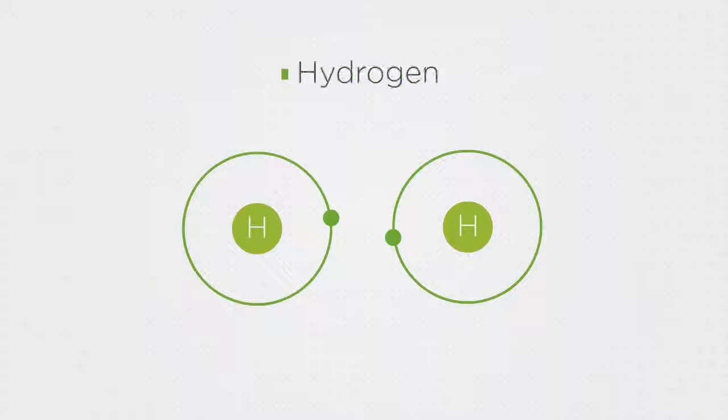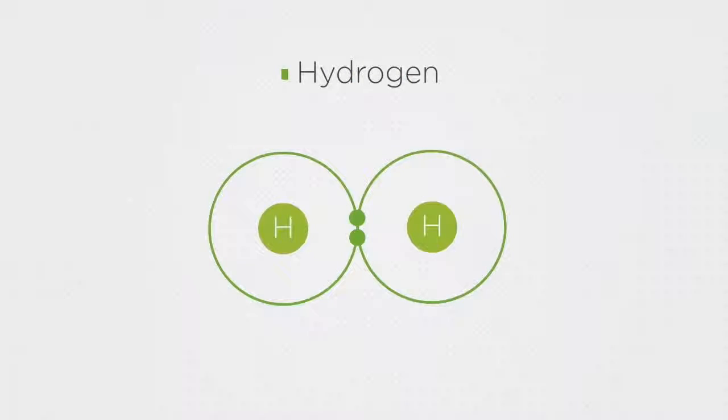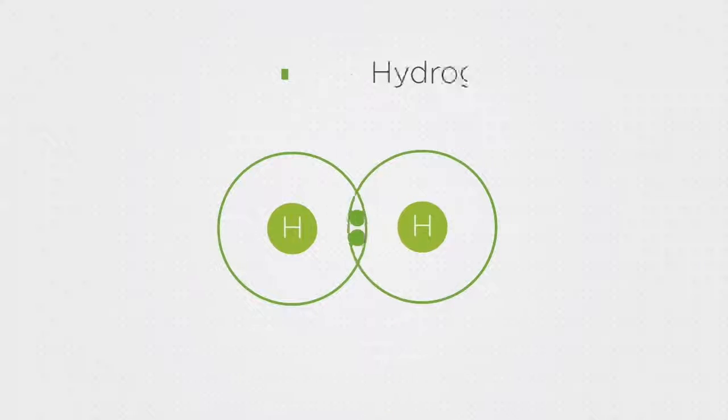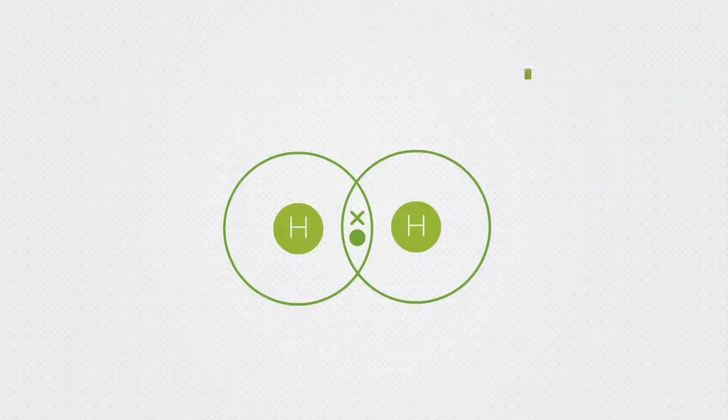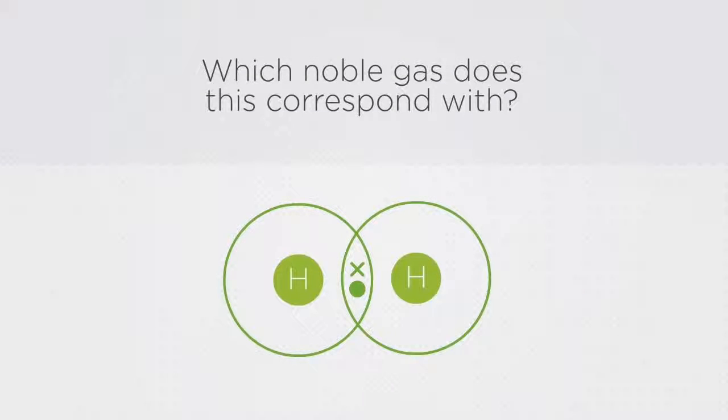Because each hydrogen atom only has one electron to share, there are two electrons being shared over two shells. These are represented by a dot and a cross. Which noble gas does this correspond with?